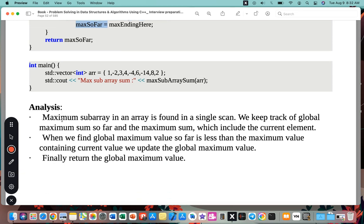Analysis: Maximum subarray in an array is found in a single scan. We keep track of the global maximum sum so far and maximum sum which includes the current element. When we find the global maximum value so far is less than the maximum value containing the current element, we update the global maximum value. Finally, we return the global maximum.